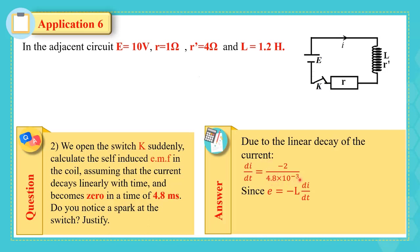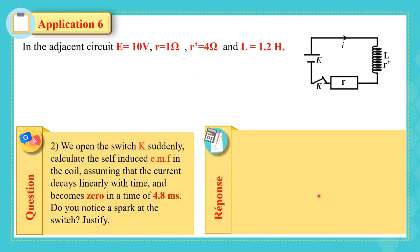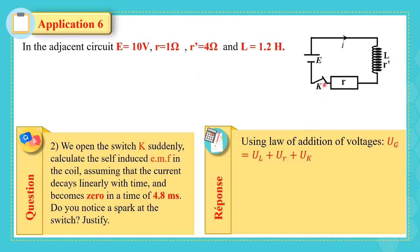Since E = −L(di/dt), we have E = −1.2 × (−2 / (4.8 × 10⁻³)) = 500 V. Using the law of addition of voltages: U_G = U_coil + U_R + U_K, where U_K is the voltage across the switch.